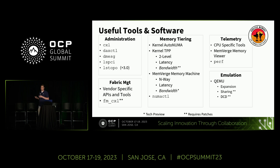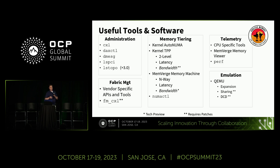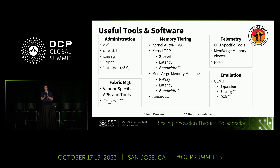For memory tiering, AutoNUMA has been around forever in the kernel. As you expose CXL devices to the kernel, you can just let the kernel manage it. Depending on your BIOS options — AMD or Intel — you can expose CXL as special-purpose memory or, if disabled, the kernel just sees it as regular DRAM and the BIOS handles everything underneath. More recently, TPP, transparent page placement, integrates latency tiering inside the kernel, allowing promotion and demotion of pages between DRAM and CXL.